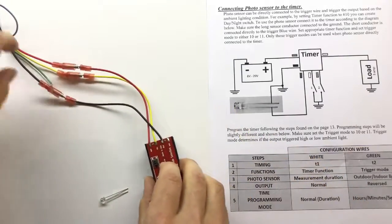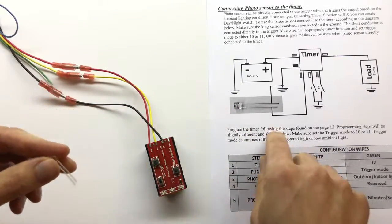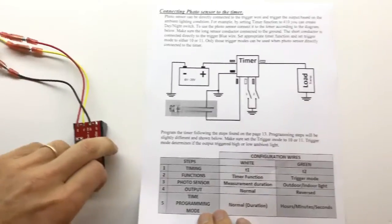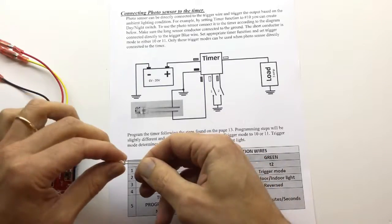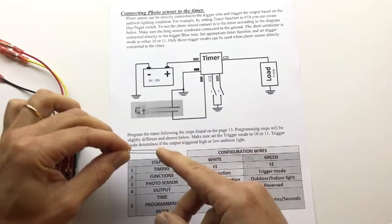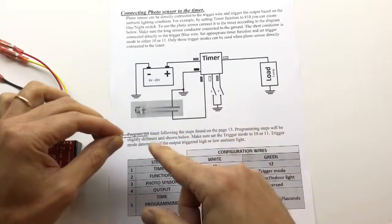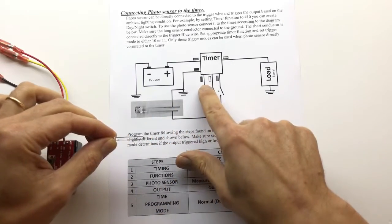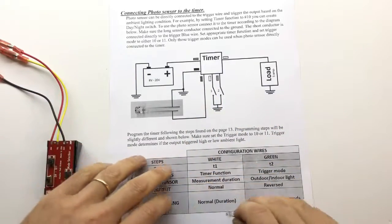The connection is very simple. So if you use a specific photo sensor, we connect it directly to the timer. We'll take a photo sensor, connect the long wire connector to the ground, to the black wire and the short one directly to the blue trigger wire and just program it.